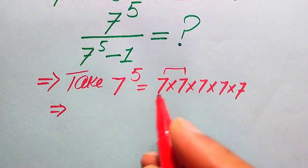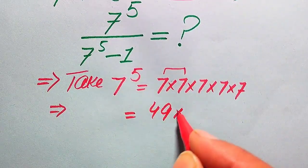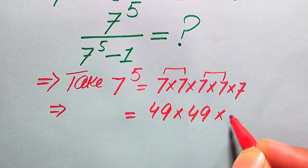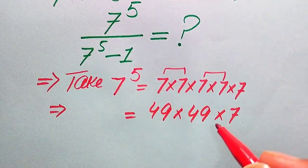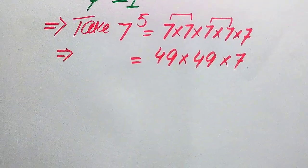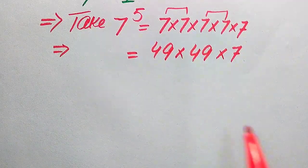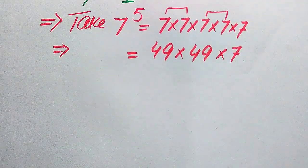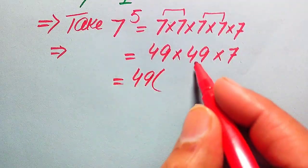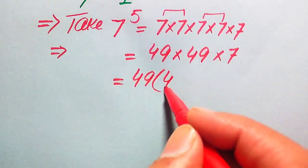Here, 7 times 7 becomes 49, and this 7 times 7 also becomes 49, multiplied by 7. Now we break this value into parts and then multiply. In further multiplication of these bigger numbers, we break 49 into the form of tens and ones.